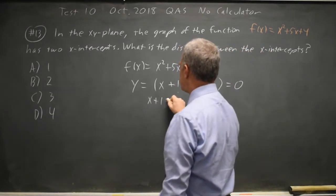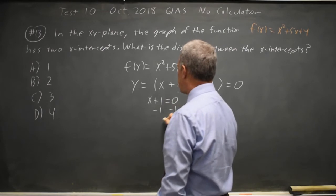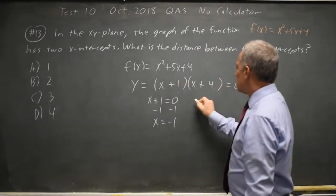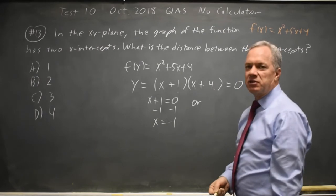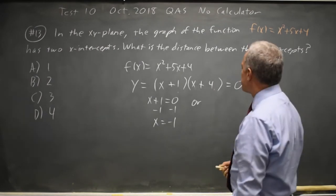So either the first factor is 0, x plus 1 equals 0, subtracting 1 from both sides, x equals negative 1, or if a product equals 0 and the first factor is not 0, then the second factor has to be 0.